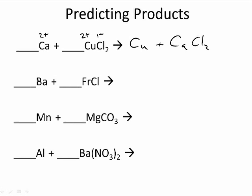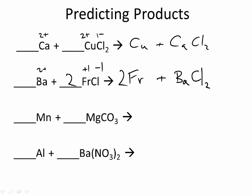Let's try the next one. Barium has a charge of 2+. Francium has a charge of 1+. Chlorine has a charge of 1−. When we put them together, we have francium by itself plus barium chloride. Let's balance — put a 2 here and a 2 here. These have been really easy to balance so far.